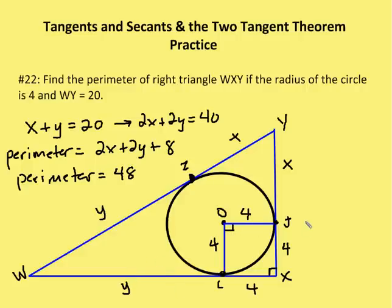If I wanted to figure out the distance of the perimeter, it would just be 2X, 1, 2, plus 2Y, 1, 2, plus 8, which is 4 and 4. Well I know I'm given that X plus Y here is 20, so 2X plus 2Y is equal to 40. So the perimeter ends up being 2X plus 2Y plus this length here, JX plus XL, which is equal to 8. So my perimeter ends up being 48.